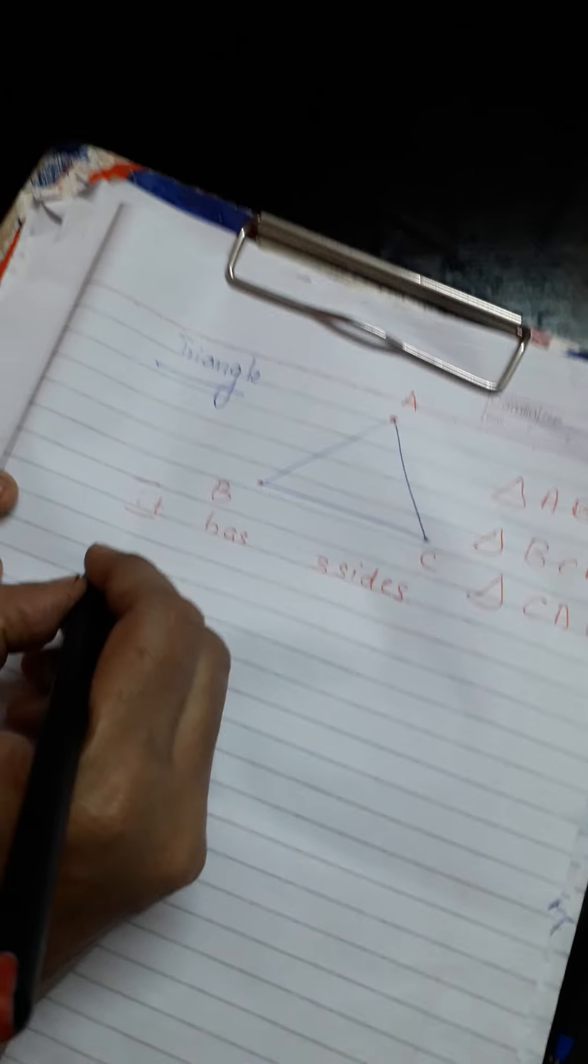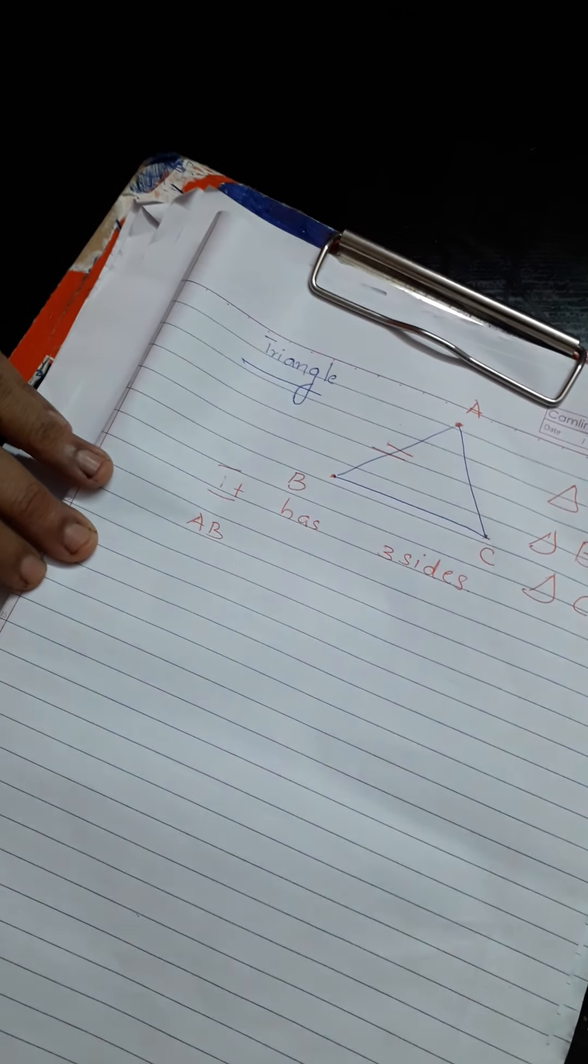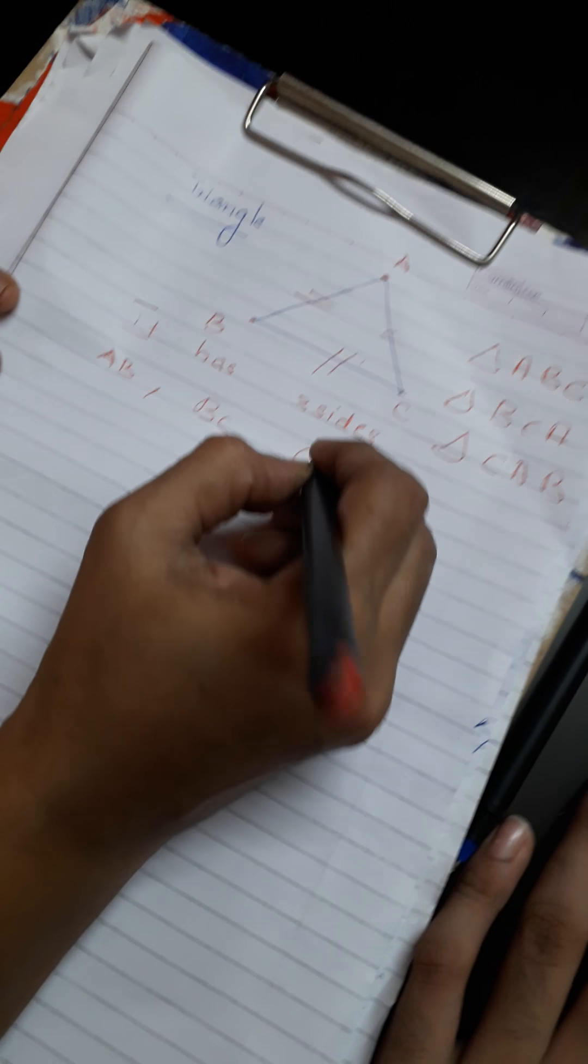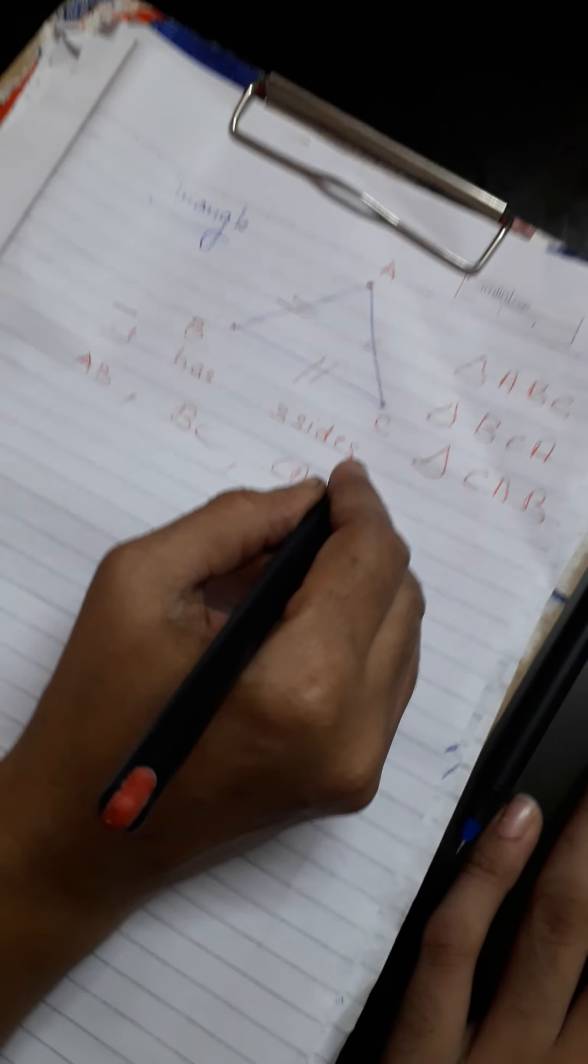So it has three sides. We can name the three sides as AB is one of the sides. Then BC is another side. Then CA is the third side. So a triangle has three sides.